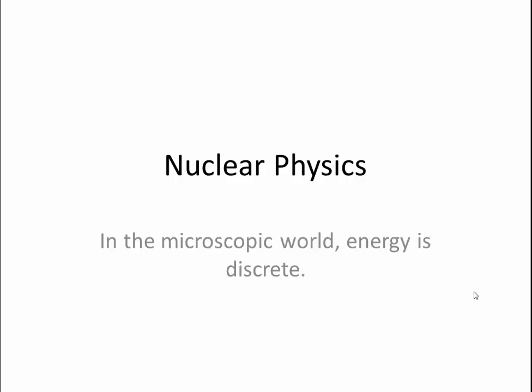First we're going to look at some aspects of nuclear physics. Why is nuclear and quantum physics thought of as being a very difficult thing to understand? We're going to look at one aspect of that now. The first thing is that in the microscopic world, in other words the nuclear world, energy is discrete, and we will look at what that means.